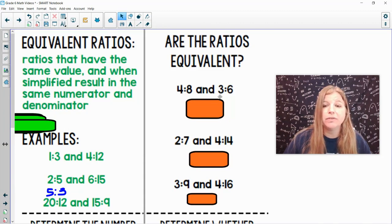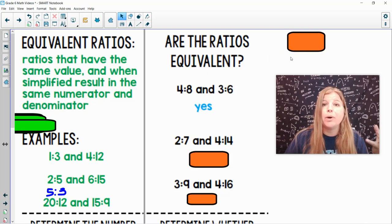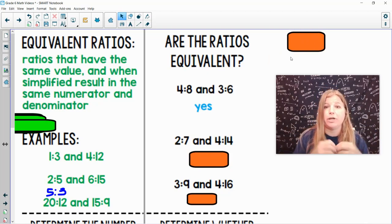Next one, are the ratios equivalent? Are they of equal value? So if I look at this, 4 to 8 and 3 to 6. 4 to 8 is really 1 half. 3 to 6 is also 1 half. So the answer is yes. They both simplify down to the same ratio.